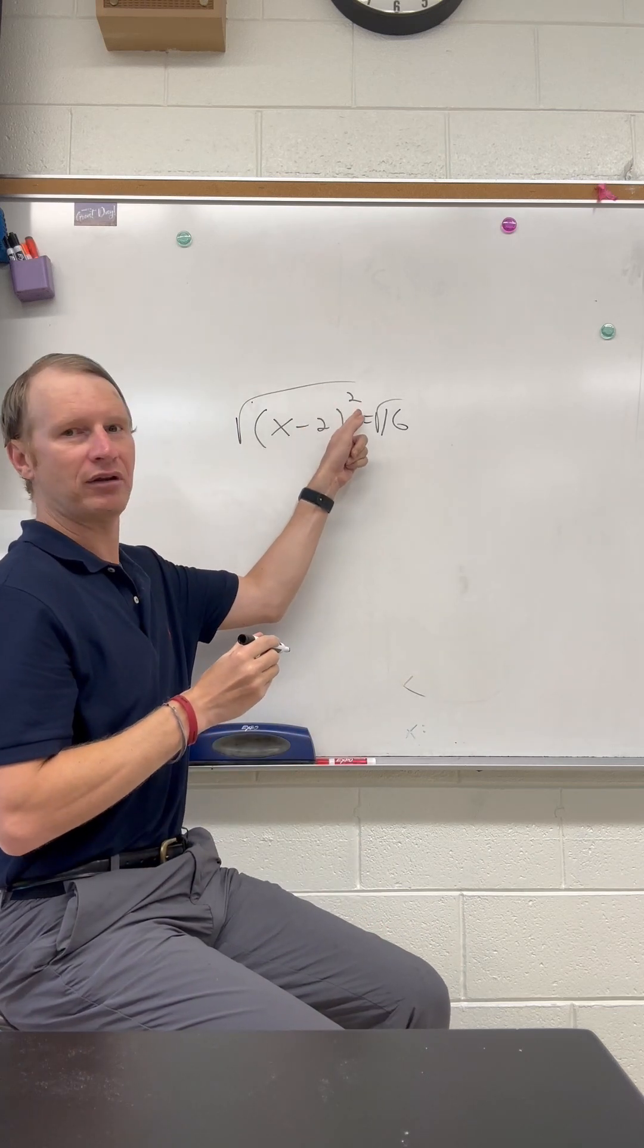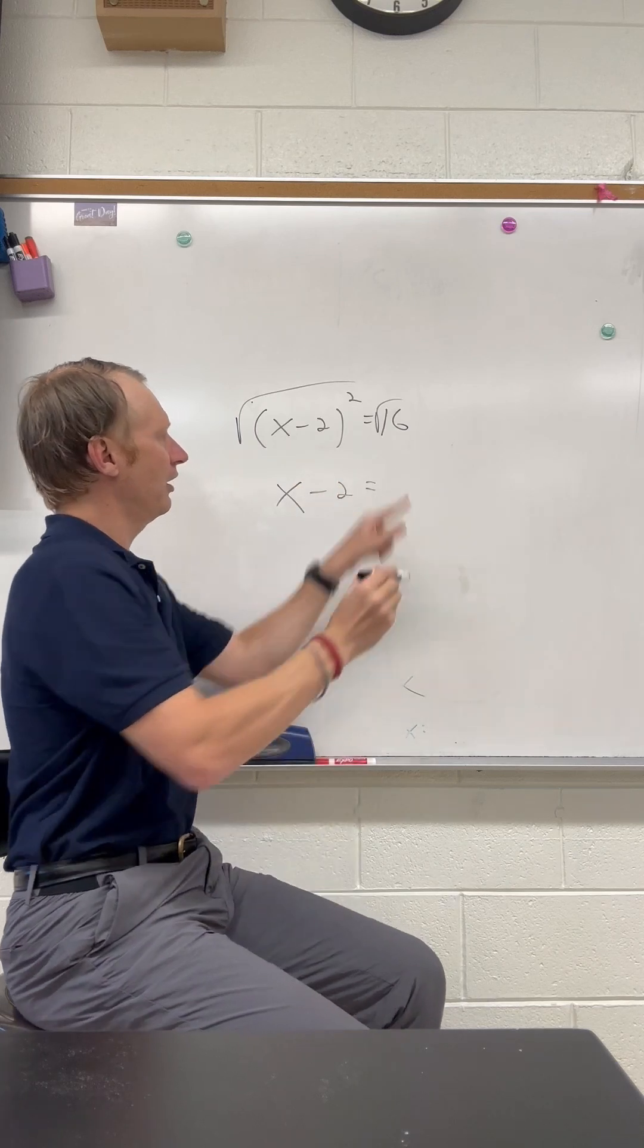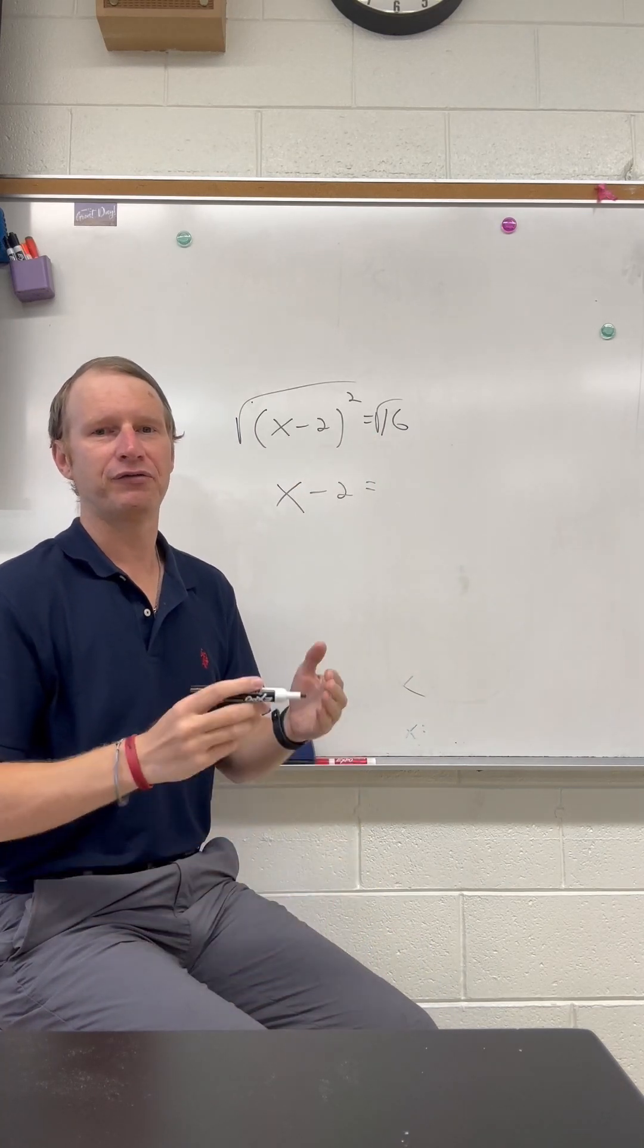Now the square root and the square will cancel each other out, so we just get x minus 2. And then the square root of 16 is 4.